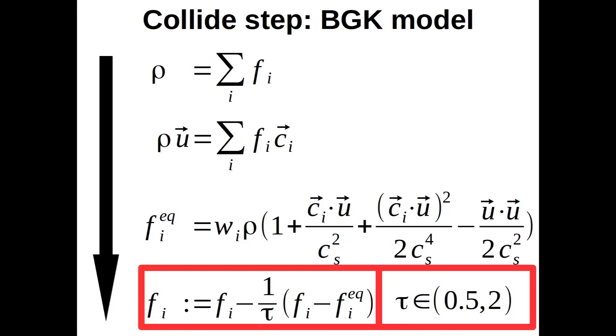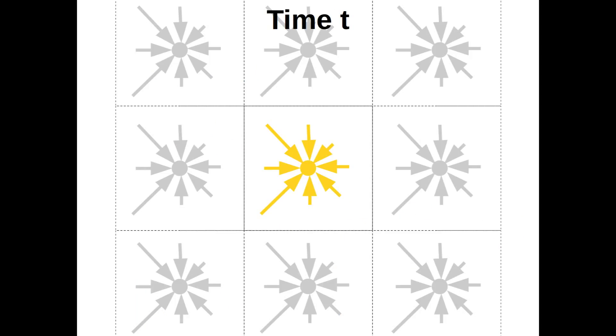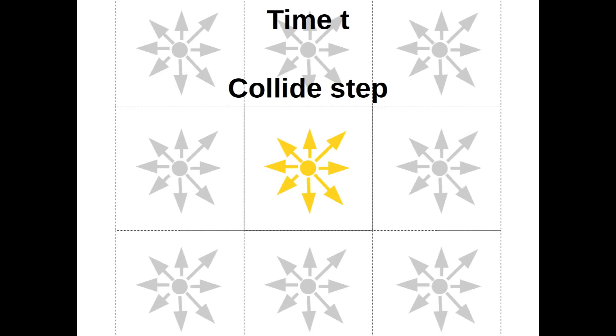Now, let's put collide step and streaming step together. Starting from time t, the particle distributions first collide locally in each cell resembling the collide step.